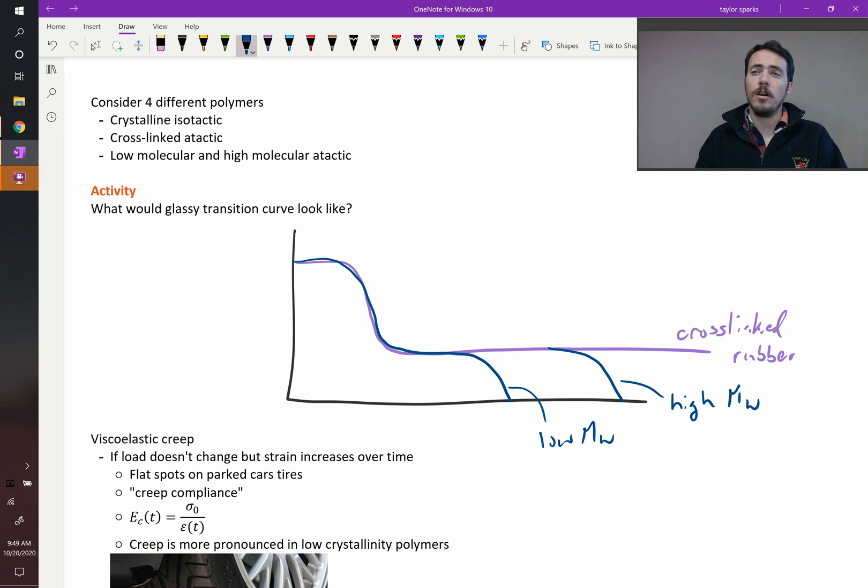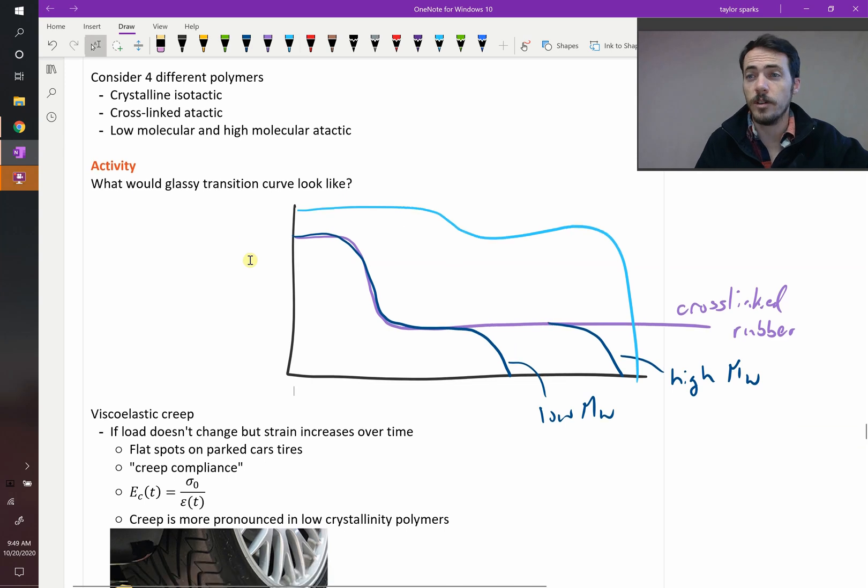Now, what would a crystalline isotactic polymer look like? Remember, isotactic, that means that all the groups are on the same side, which makes it much more crystalline. So that one's going to look like this, it's going to have a higher modulus overall. But it's also eventually going to look like a material that flows, because it will melt, because it's not cross-linked. So these glassy transition curves are really useful for understanding behavior of different polymers, especially as a function of their conditions they can be tested under.